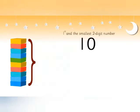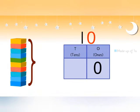Number 10 is the first and smallest two-digit number. In a two-digit number, the digit on the right is written in the ones column, as it is made up of ones. It is also called units. The number on the left is written in the tens column, as it is made up of tens.